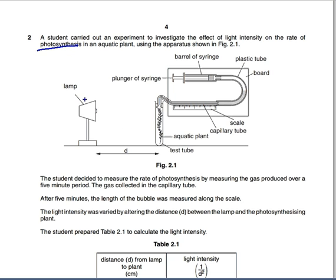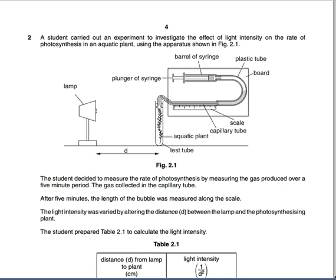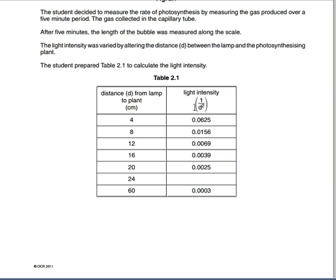Photosynthesis - the gas produced is O₂, collected in the capillary tube up here. The light intensity was varied by altering the distance between the lamp and the photosynthesising plant. The student prepared table 2.1 to calculate the light intensity. So look at that - it's 1 over D squared. That would look scary if you're not doing A-level maths, even if you've got a grade A at GCSE maths - it's been nearly two years since you sat it. Let's have a look at what it actually means.